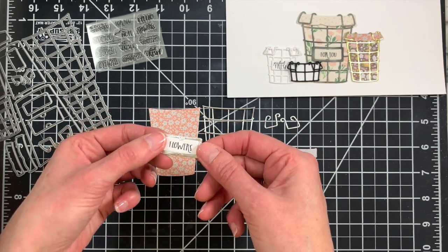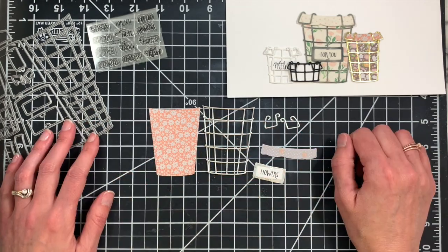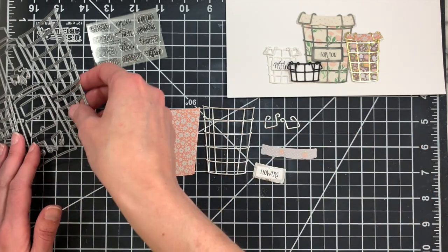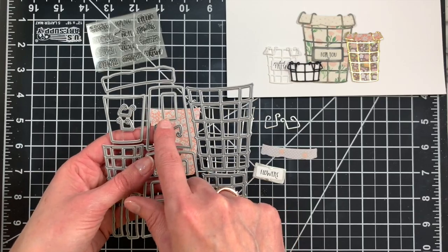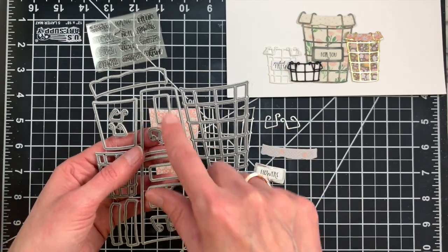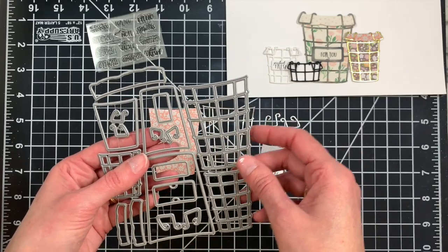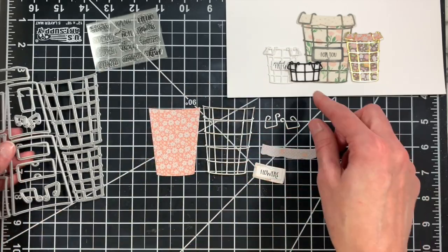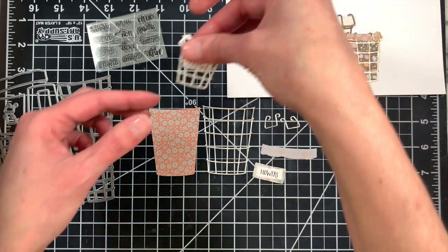All of the sentiments from the stamp set fit on that little label. For the two smaller sized baskets, there is a slightly smaller label which is a little bit better scale for those baskets than the larger one. There is no backing for that label since it is quite small, so you will just use that smaller label on its own.